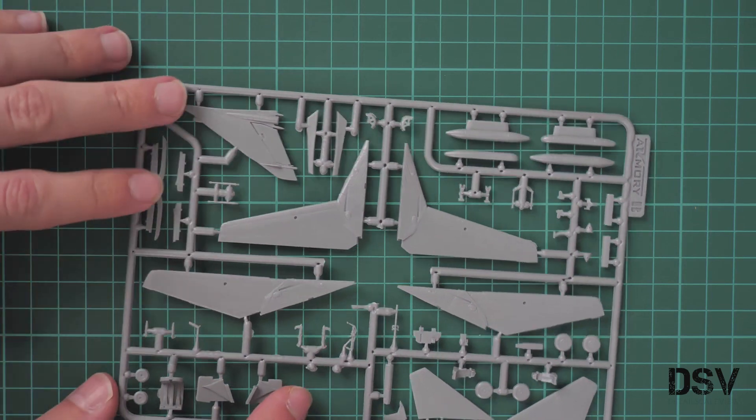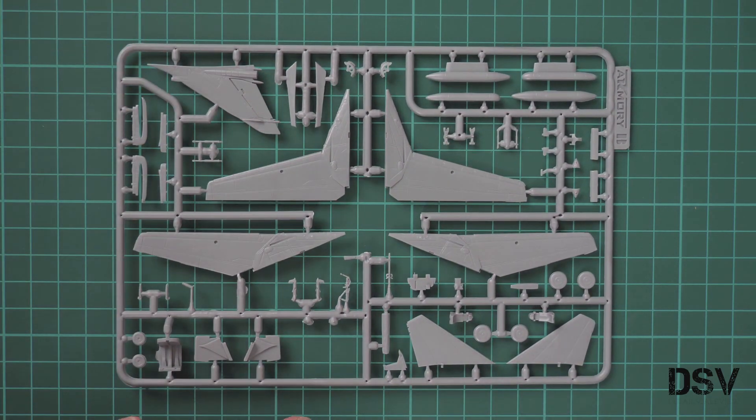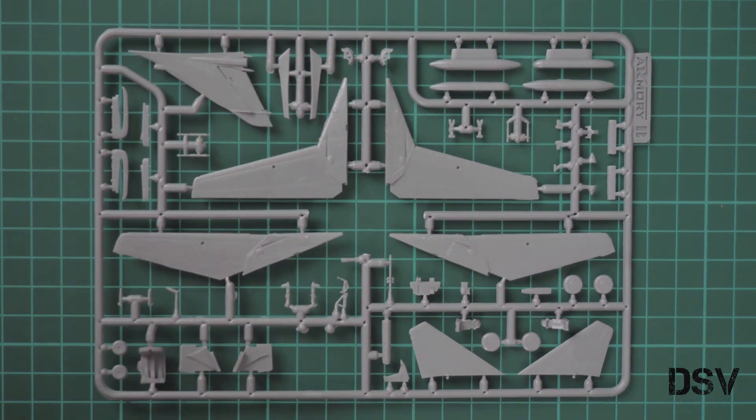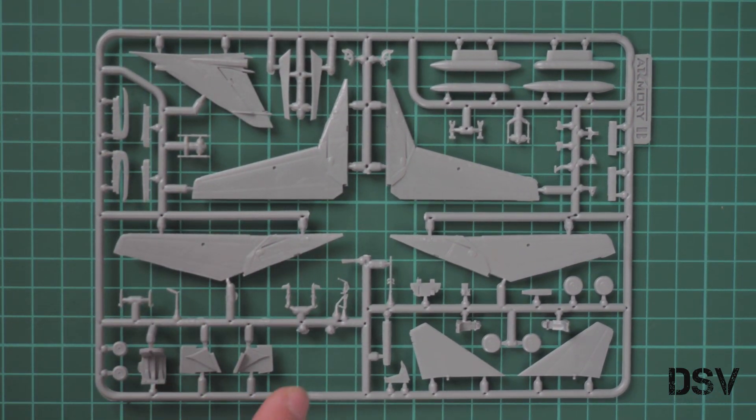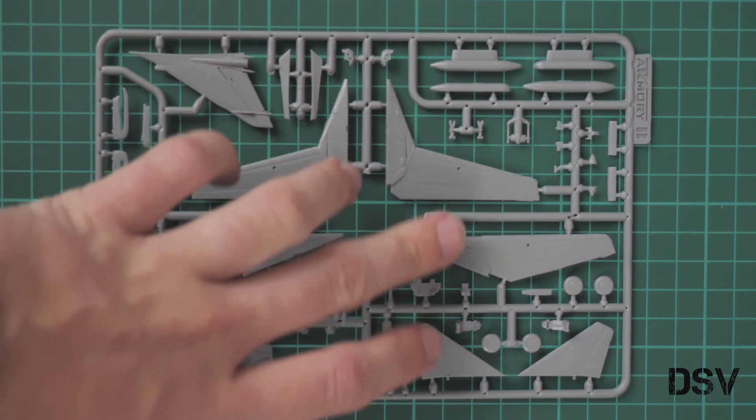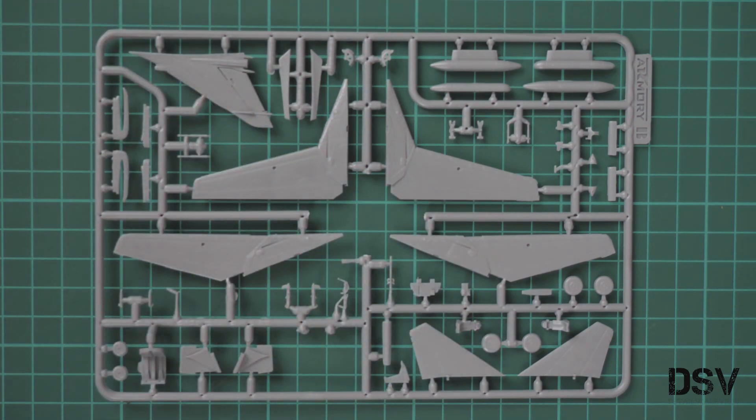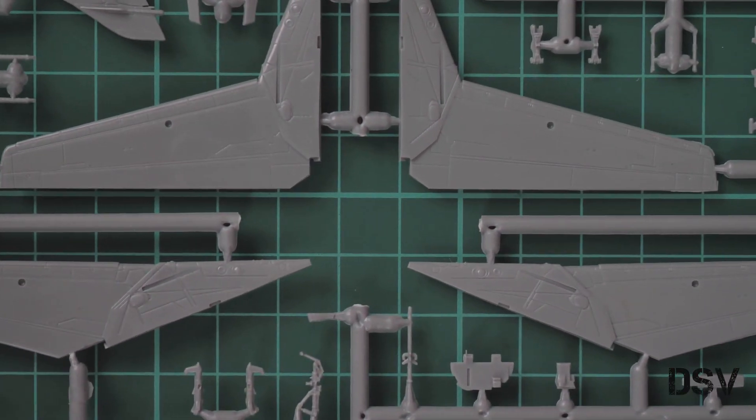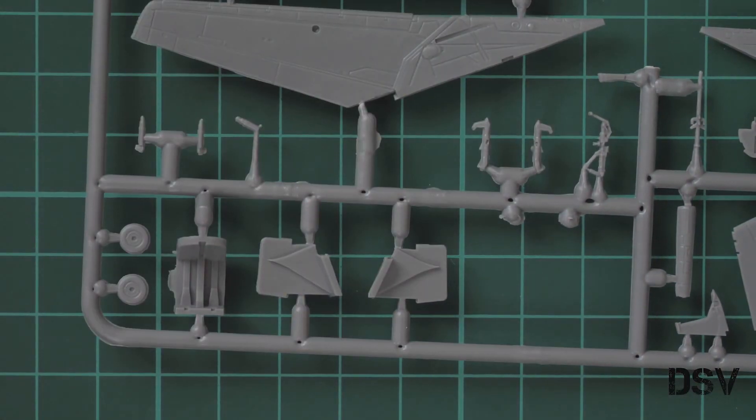Next we have the last gray plastic sprue. Here the manufacturer placed wing parts, tail section parts, and parts for the landing gear system and cockpit. We have two separate parts for various wing configurations. The wings won't be movable; you'll have to decide straight away and then it will be fixed for your project. Let's zoom in and check those parts closer.